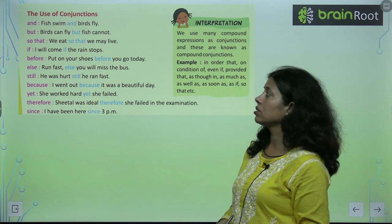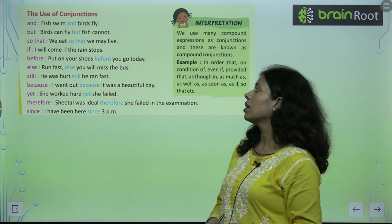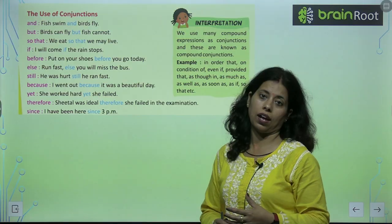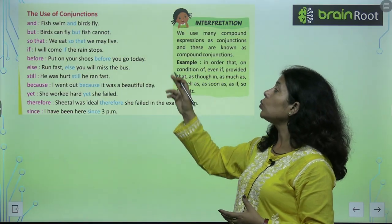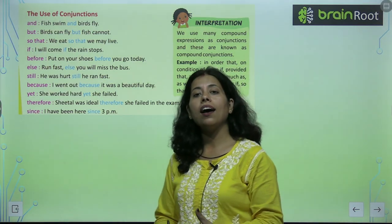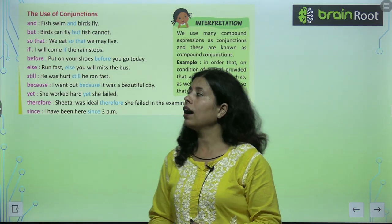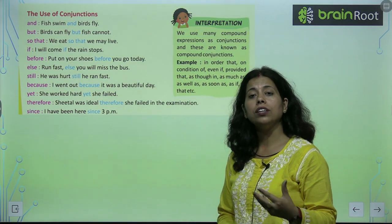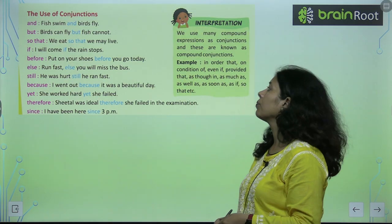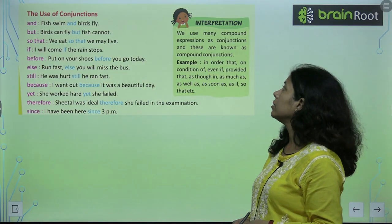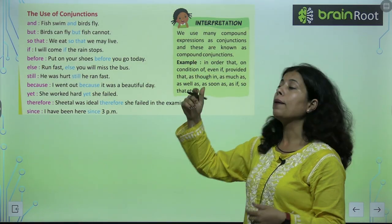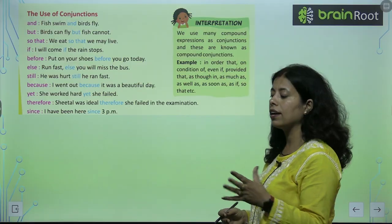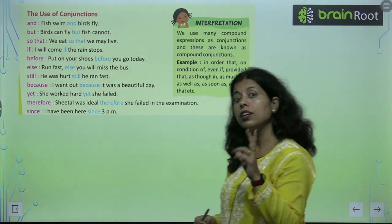The use of conjunctions — kahaan use karte hai? 'And' — Fish swim and birds fly. Machli teherti hai aur chidiya birds hoti hai, woh udti hai. 'But' — Birds can fly, but fish cannot. Birds fly karte hai par fish nahi.